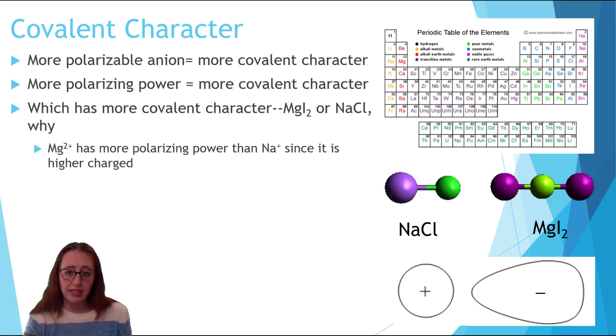Mg2+ is close to the same size as sodium since it's so near it in the periodic table, but it has the bigger positive charge, which will make it both smaller and also have a higher proton to electron ratio. This means that it has more polarizing power than sodium. This points toward magnesium iodide having more covalent character, but we need to check the anion.